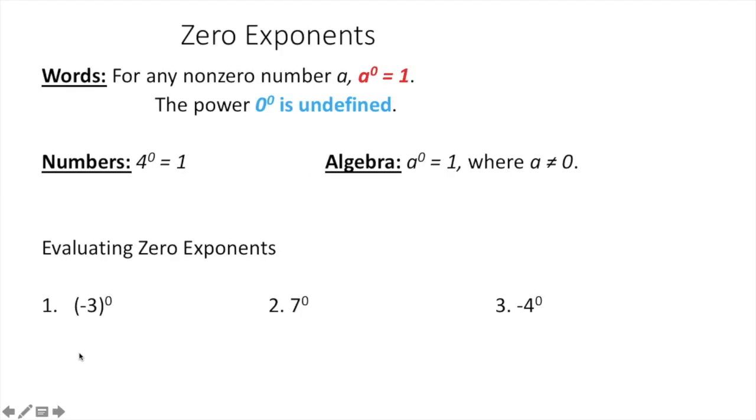So, first of all, zero exponents. The definition in words says for any non-zero number a, a to the zero is equal to one. Now, the only thing that isn't true is if you have zero raised to the zero power, then that's called undefined, and we can show you that later, why that is.